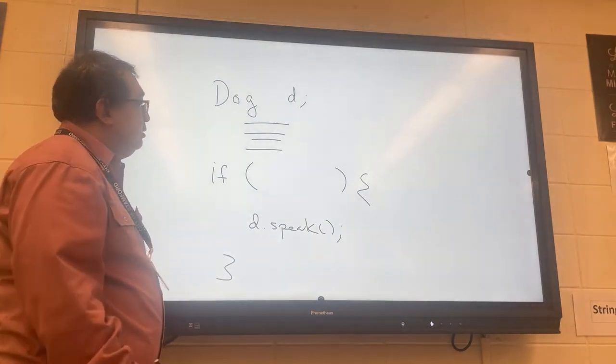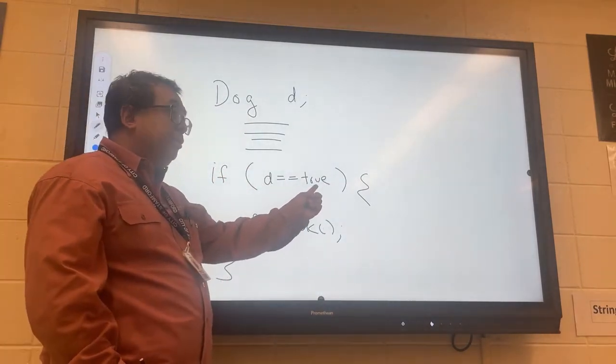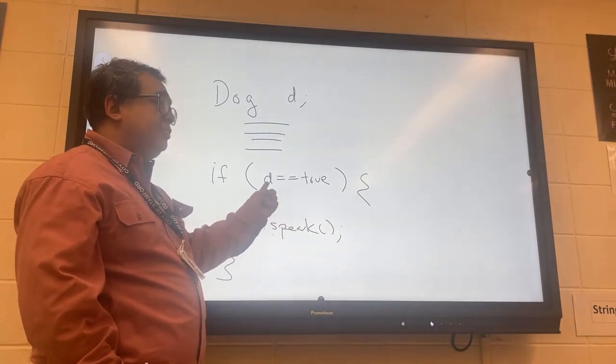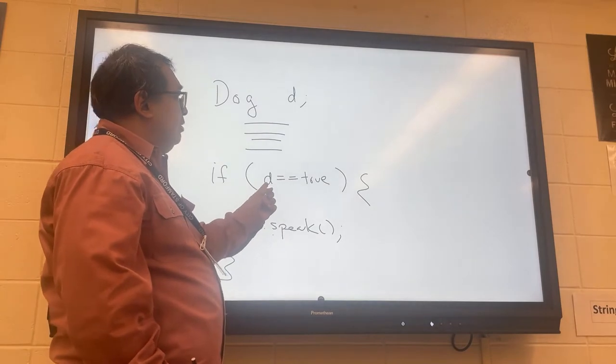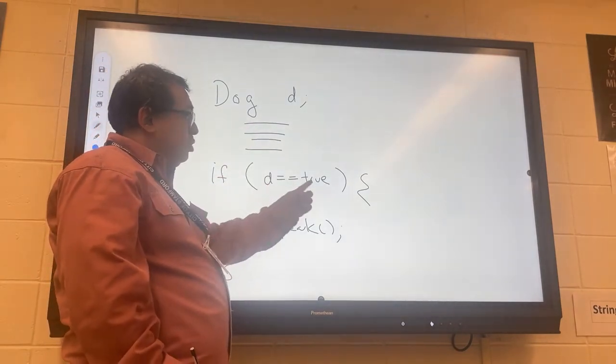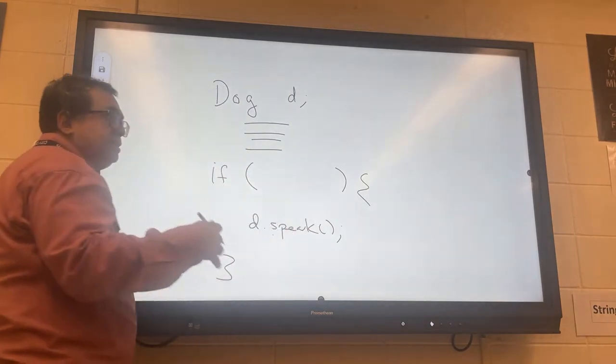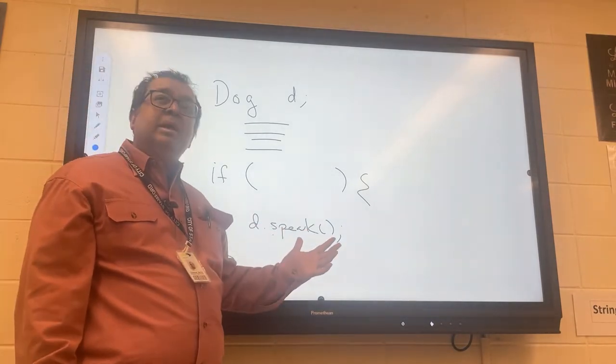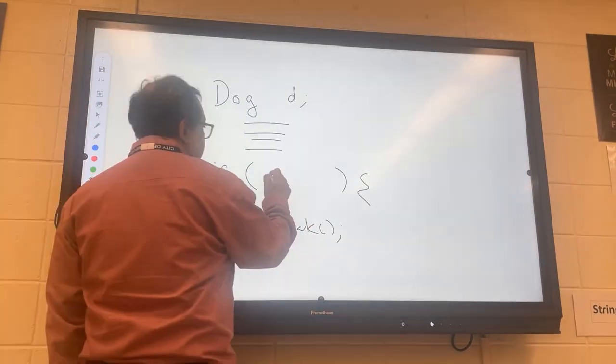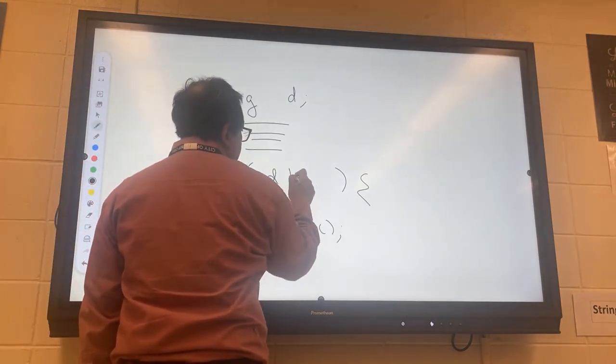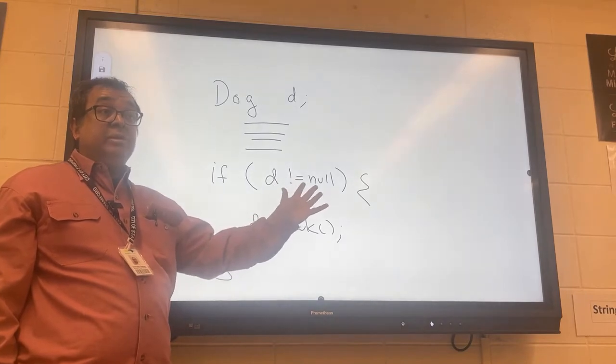Jeremy, what do you think? Dog D equals true? No, true is a boolean literal. D is an object, a dog object. A dog cannot be true or false, but you're starting to get to the right idea. We want to check the variable D to make sure there's actually something in there. What is it that we're trying to avoid it being? We don't want it to be null. So we want to say if D is not equal to null, then we want to do that thing. This is called a null guard. I'm guarding against a null pointer here.